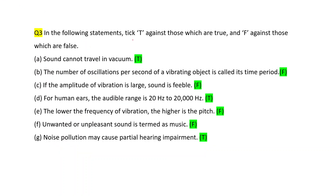In the following statements, write T for true and F for false. First: sound cannot travel in vacuum — this is a correct statement, so T. Second: the number of oscillations per second of a vibrating object is called its time period — this is a wrong statement.